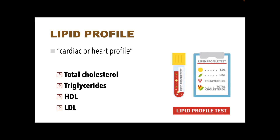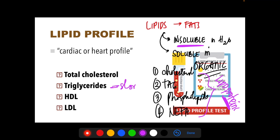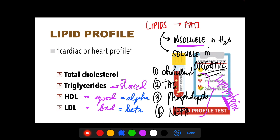Triglycerides are the stored lipids in the body. HDL is the good cholesterol — it is actually a lipoprotein referred to as good cholesterol — whereas LDL is the bad cholesterol. To remember: HDL starts with H for heaven (good), and LDL starts with L for lethal (bad). HDL migrates in the alpha region of electrophoresis, whereas LDL migrates in the beta region — good alpha, bad beta.